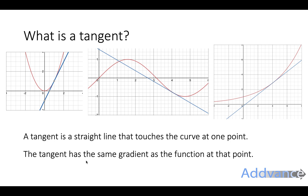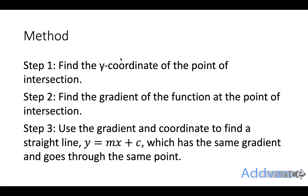The tangent has the same gradient as the function at that point — this is really important. It has to have the same gradient as the function at that point. To find the tangent: step one, find the y-coordinate of the point of intersection; step two, find the gradient of the function at the point of intersection using differentiation. If you don't know how to differentiate, watch my video on differentiation before continuing. Step three, use the gradient and the coordinate to find the straight line y = mx + c that has the same gradient and goes through the same point. If you're not familiar with y = mx + c, watch my video on that topic before continuing.